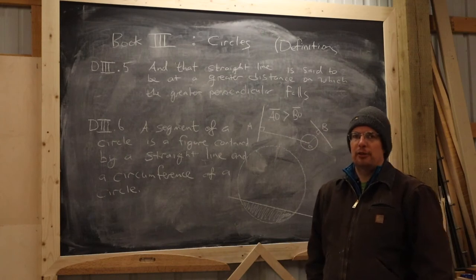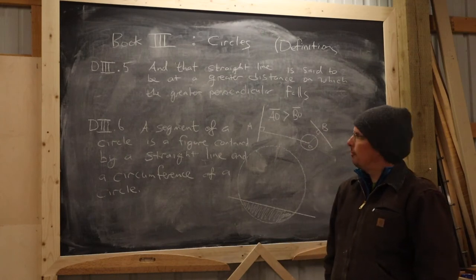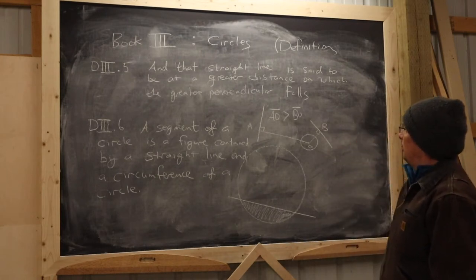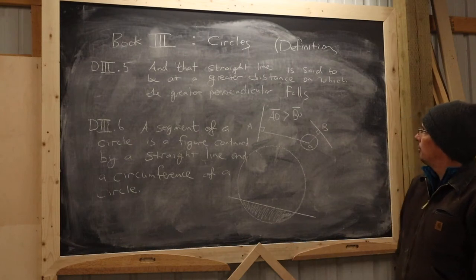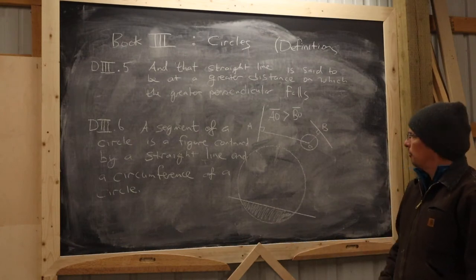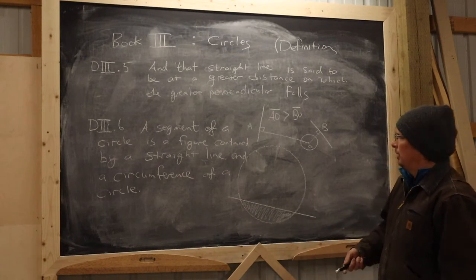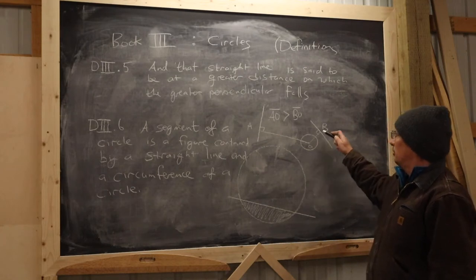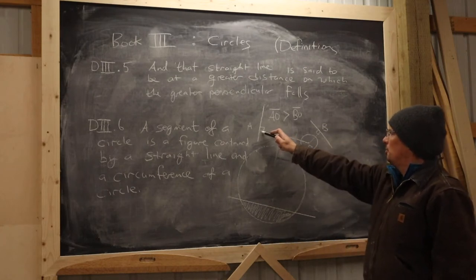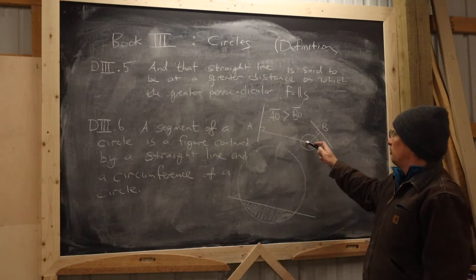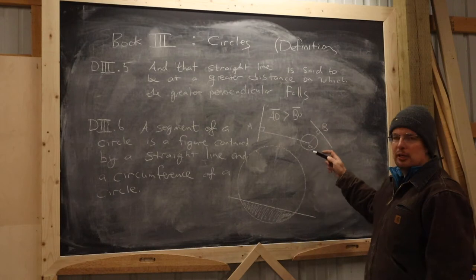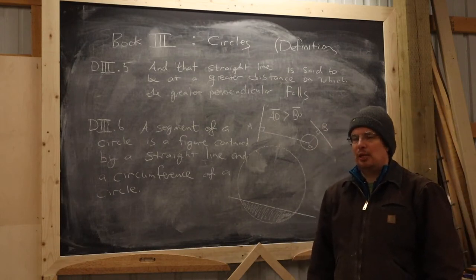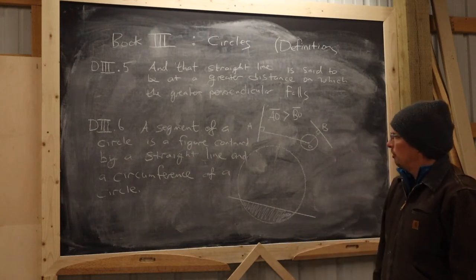Definition five is a follow-up to definition four. It states that the straight line at a greater distance is the one on which the greater perpendicular falls. So if the perpendicular drawn from the center to one line is longer than the perpendicular to another line, the first line is at a greater distance from the center. Euclid is continuing to compare distances between line segments and the center of a circle.